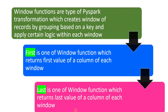First of all, we can understand what is a window function. Window functions are a type of Spark transformation which creates a window of records by grouping the dataset or data frame based on a particular key, then applying certain logic like rank, dense rank, first, and last within that window. Coming to first, this is one of the window functions which returns the first value of a column for each window. And last is just opposite to first — it returns the last value of a column for each window.